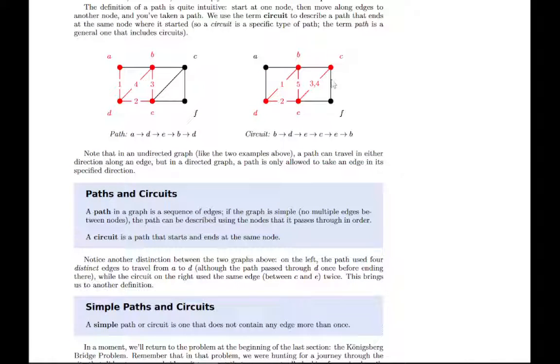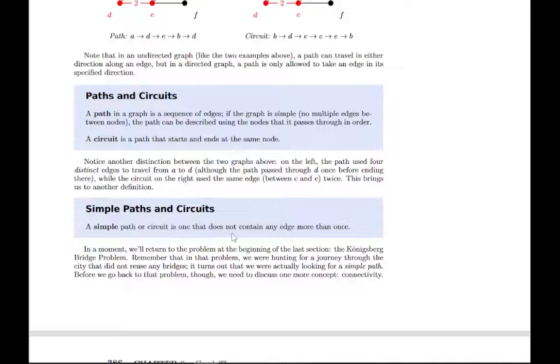So we talked about one where the edges were reused or not reused. If it reuses edges, that's not what's called a simple path or circuit. A simple path or circuit is one where you don't reuse any edges. If you remember at the beginning of section 8.1, we talked about that problem with the bridges in Konigsberg. That problem was to find a route through the city crossing each bridge exactly once. So we didn't want to reuse any. So that was an example of a simple path we were looking for.